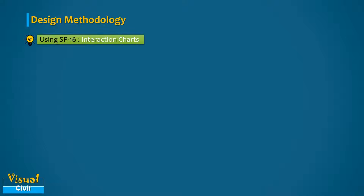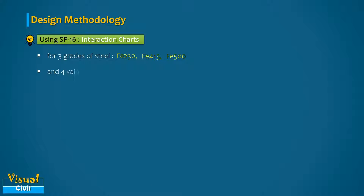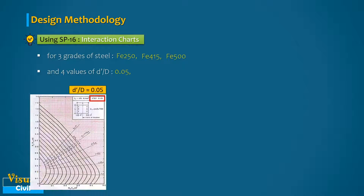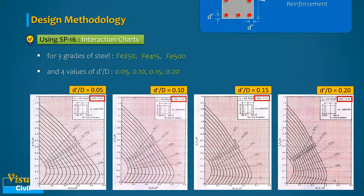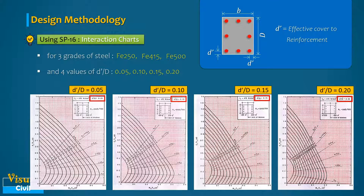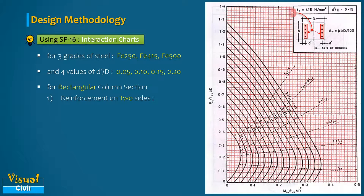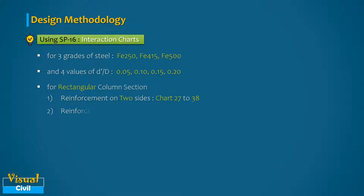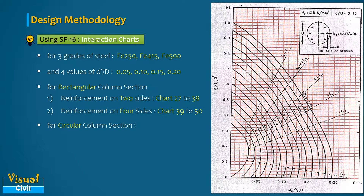These interaction charts are given for three grades of steel: Fe 250, Fe 415, and Fe 500, and for four values of d'/d: 0.05, 0.10, 0.15, and 0.20, where d' is the effective cover to the reinforcement. For rectangular sections, two types of charts are given — reinforcement on two sides (Charts 27 to 38) and reinforcement on all four sides (Charts 39 to 50). For circular column sections, the charts are from 51 to 62.